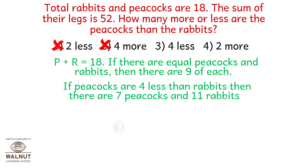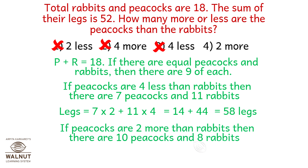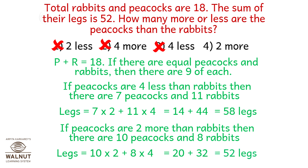Let's try option number 3. If peacocks are 4 less than rabbits then there are 7 peacocks and 11 rabbits. Doing the math we get 58 legs, so that's not going to work too. If peacocks are 2 more than rabbits then there are 10 peacocks and 8 rabbits. We get 52 legs, so option number 4 is correct.